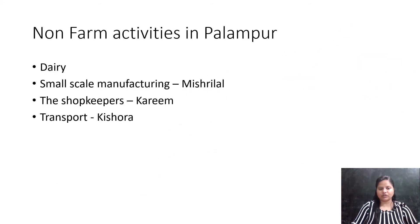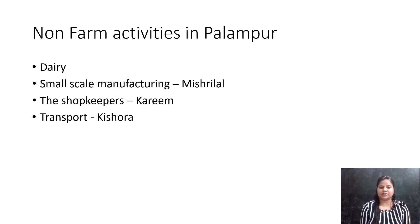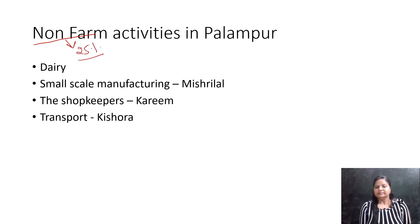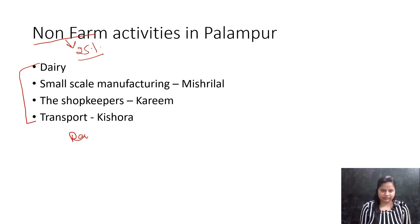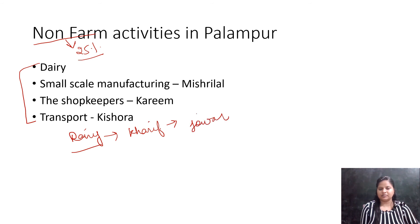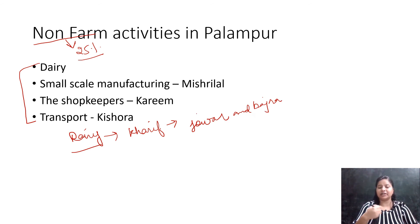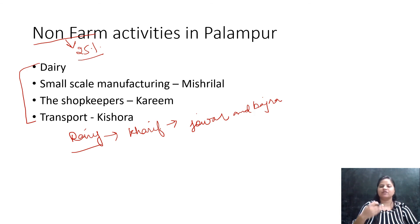Now we need to see what the non-farm activities are in Palampore. As I told you in Part 1, 75 percent of people are engaged in farming activities, and 25 percent are engaged in non-farm activities. These 25 percent people are engaged in four kinds of work. First is dairy: during the Kharif season, jowar and bajra are grown for cattle feed. Farmers sell milk and milk products in the market, going to the nearby small town of Shahpur, which has a chilling center where milk can be preserved for a longer period.